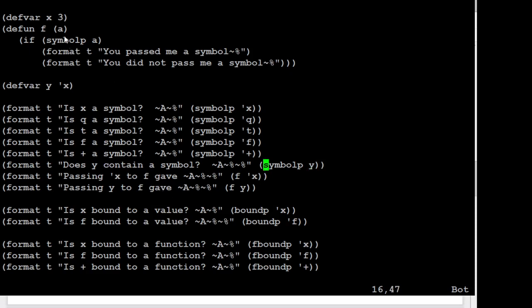Then we'll try a couple of function calls. We'll call f, and f is going to look at whatever it was passed, and see is that a symbol, yes or no. We'll pass the symbol x to f. That should come back and tell us that x is a symbol. We'll pass the contents of y to f. Since the contents of y are a symbol, it should come back and tell us that that's a symbol too.